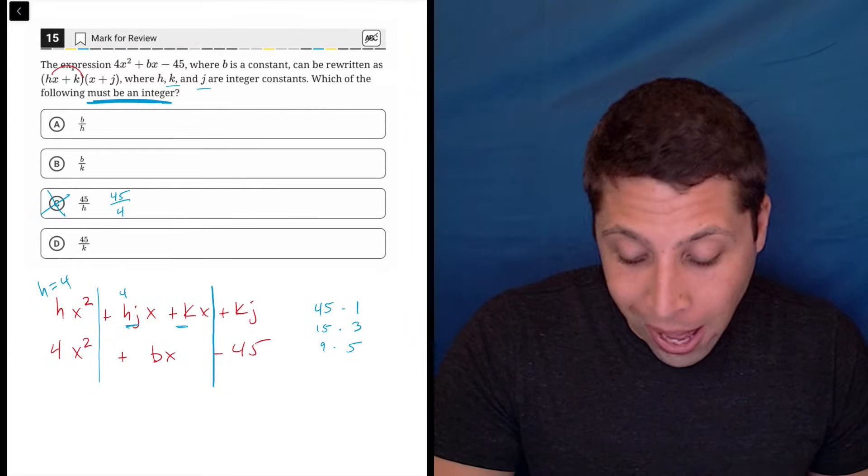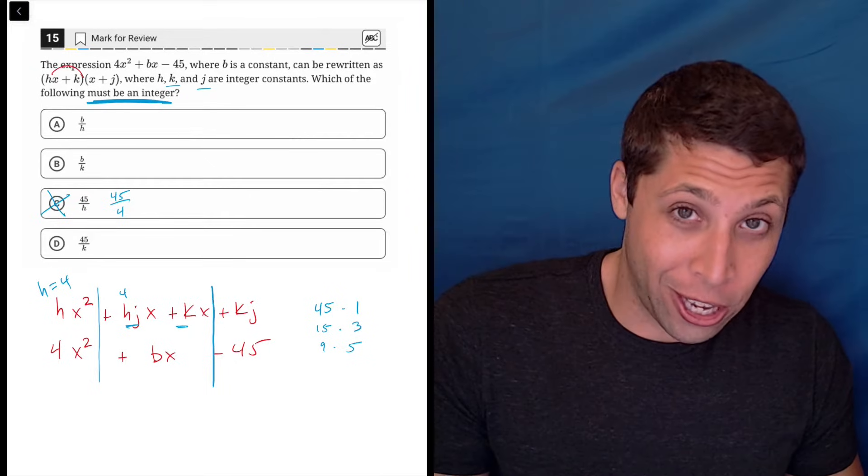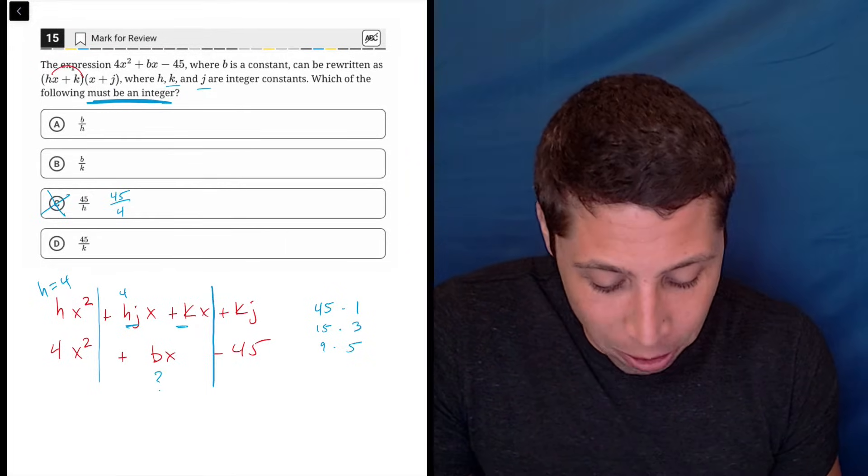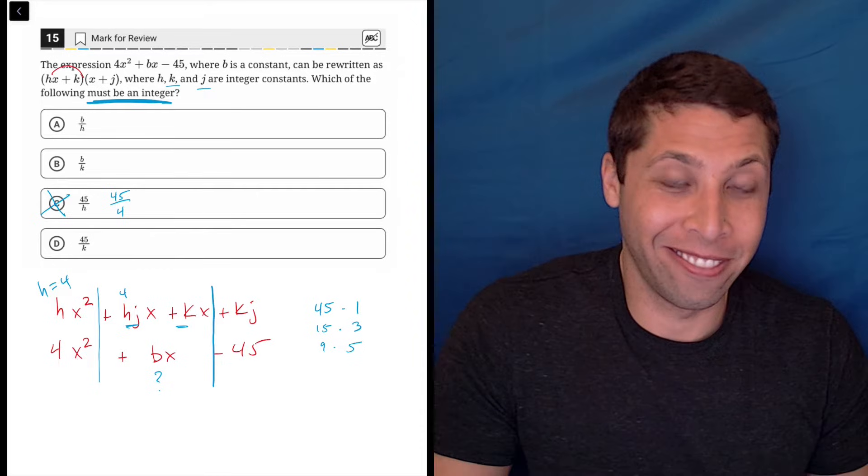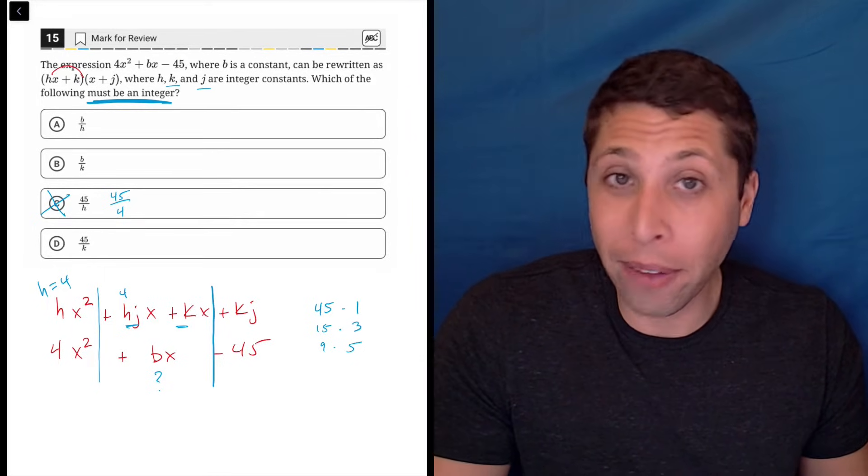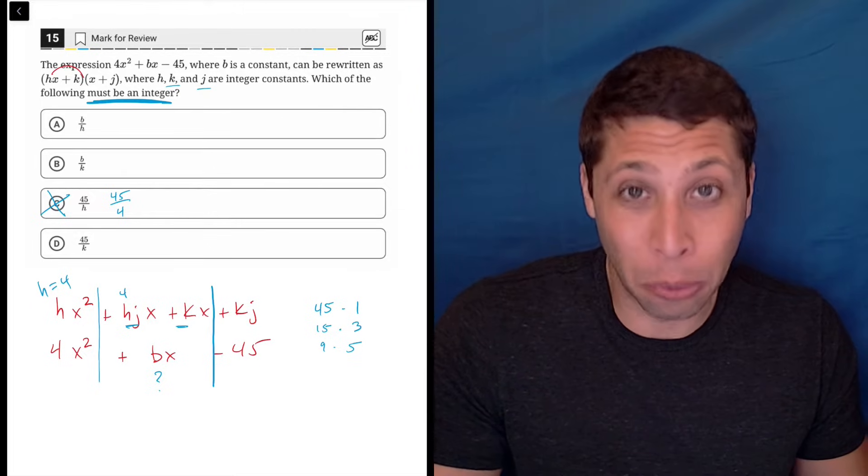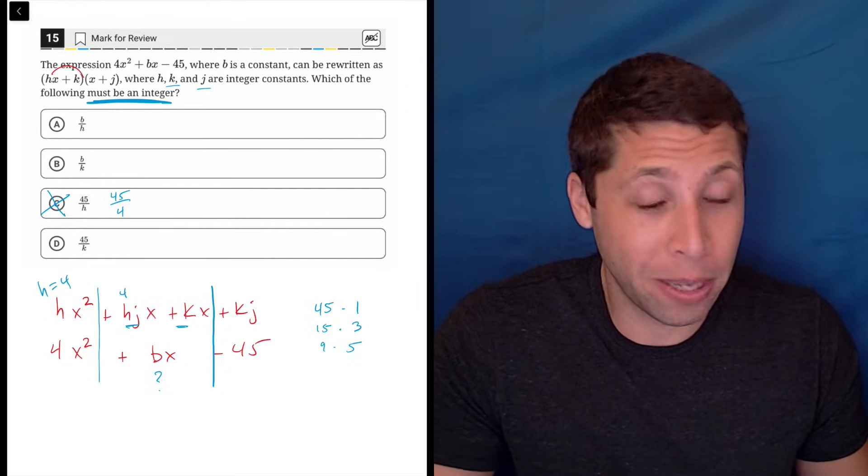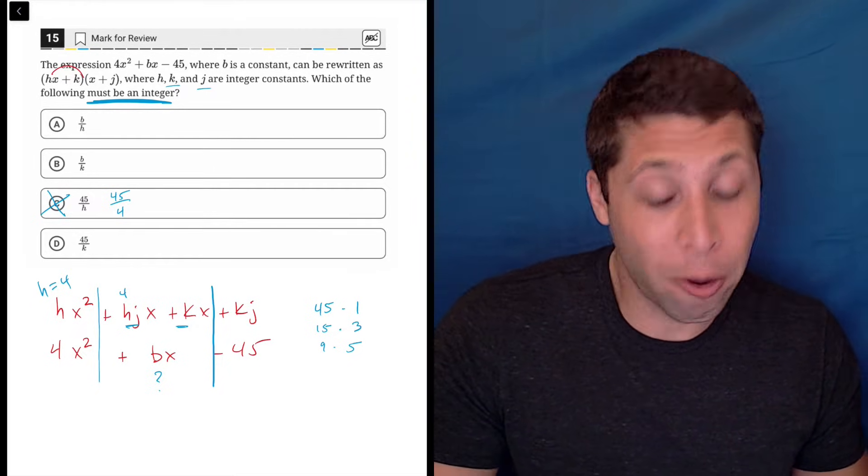The other two, A and B, include the b term, which I don't really know about. That's the least tangible of these pieces here. I would move away from A and B, and I would just be like, is there a way for me to prove that D is right? Because if so, that would be awesome.